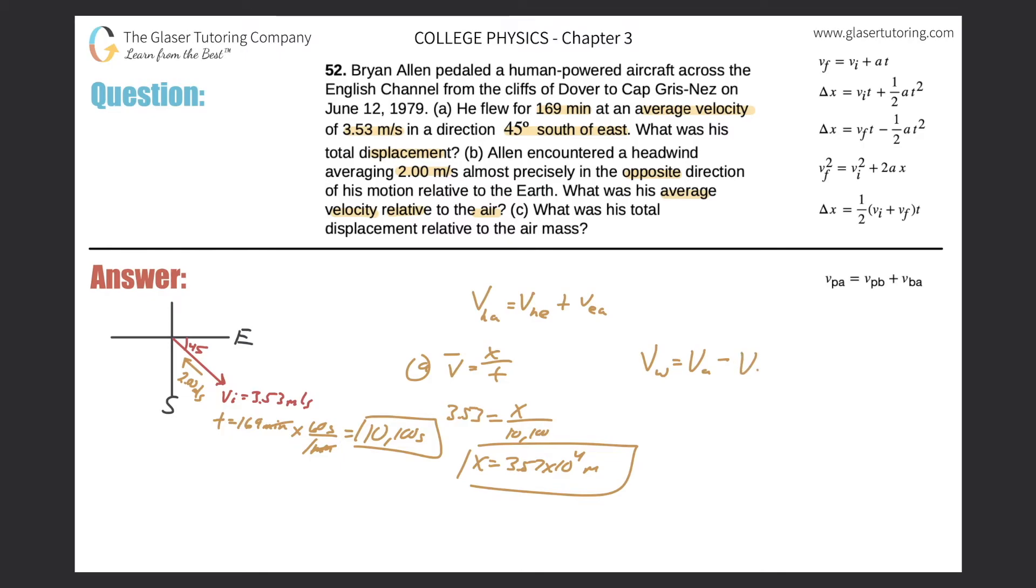So his velocity relative to the air, to the wind, will be equal to 3.53 minus, and I'll call this a negative 2.00. Why is it negative? Well, because it's opposing his motion. So I'm just saying if this were being the positive value, then the opposite direction should be the negative value. Alright? So we have a simple addition here, so this should be 5.53 meters per second. That takes care of that. So that's letter B.